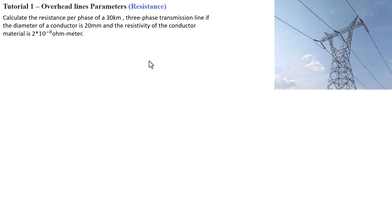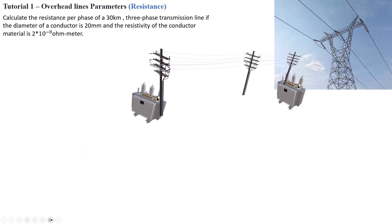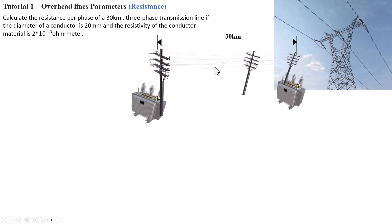Illustration is very key in solving this type of problem. We've got a transmission line — basically a step-up transformer transmitting power over the transmission line, and wherever the power is going, we're going to have a step-down transformer as well. This transmission line is said to have a 30-kilometer length. The material being used for this cable is said to have a resistivity of 2 to the power negative 8.